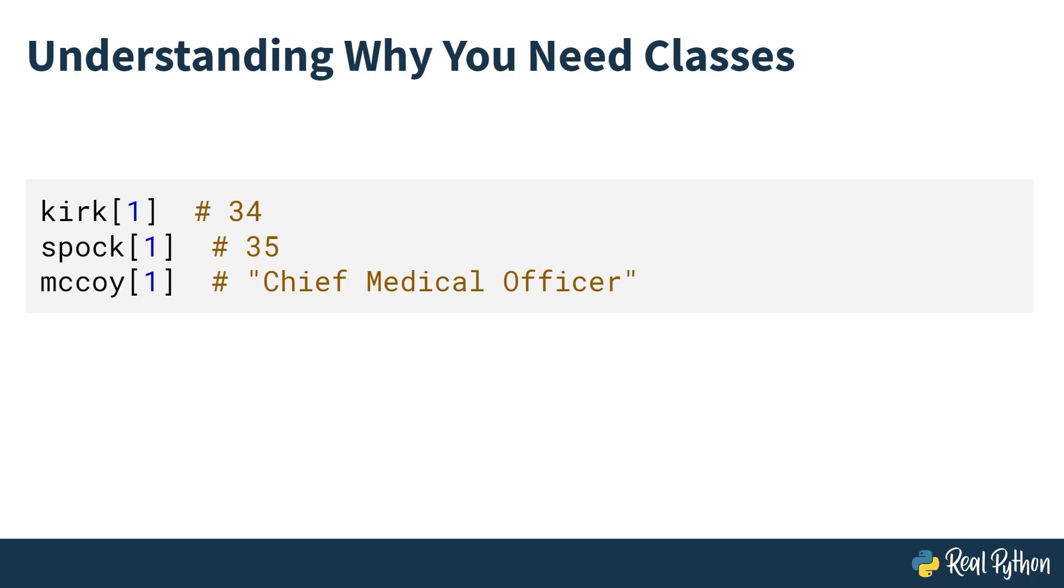Whereas if you had used classes, you're going to get into actually how to do that later in the course. But if you'd use classes, the same operation will look something like this. You have Kirk.age, and this immediately tells you, I'm getting the age from Kirk. This returns 34, 35 in the case of Spock. And in McCoy, it will give you an attribute error because it's saying I don't have the age for McCoy. Whereas with the list, it would just return a string value, and it's not really telling you anything about the object itself, the person that it represents.